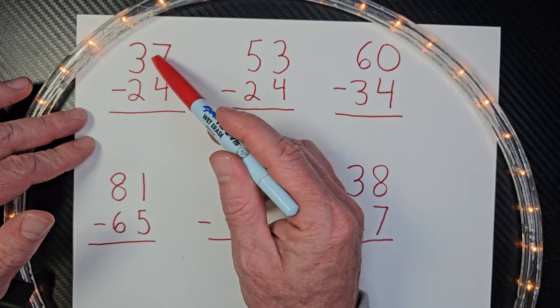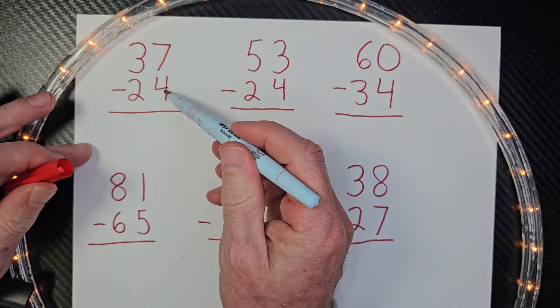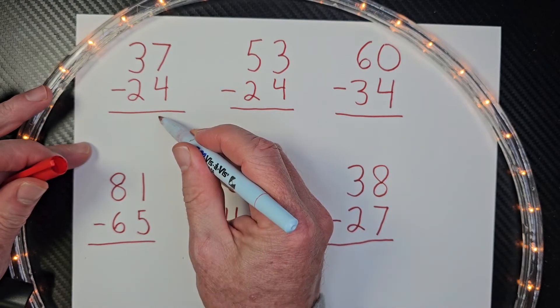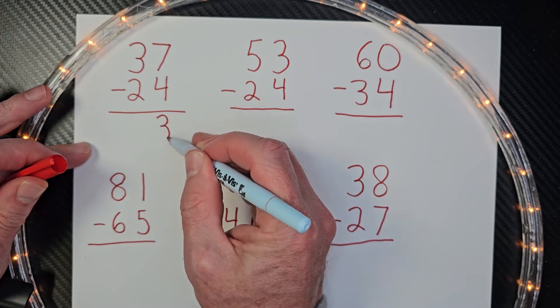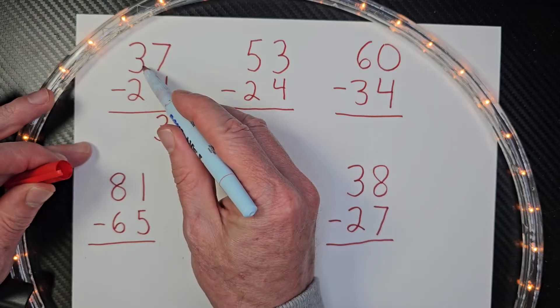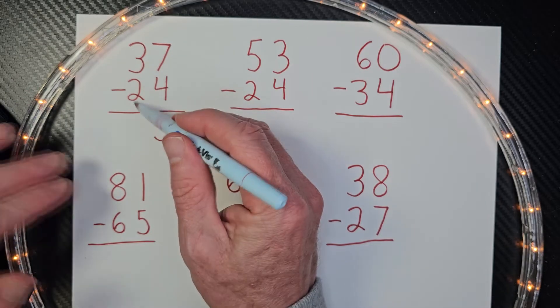We don't need to borrow. So we can just go ahead and take seven minus four. So seven minus four would be three. And then I subtract the tens. Three minus two would be one.